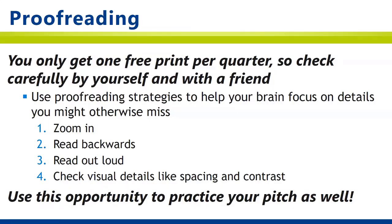Because you can only print once, you want to be sure that you've fully proofread your poster before your printing appointment with the STC. You can proofread however you normally do, but also use some advanced strategies to help your brain notice really tiny issues. You can zoom in really close so that your words and design look much larger than they normally look on screen. You can read backwards starting with the last sentence and working your way up to take things out of context. You can read out loud, which has a similar effect. And you can use this opportunity to make sure that the spacing and the contrast between all your elements is what it should be for readability.